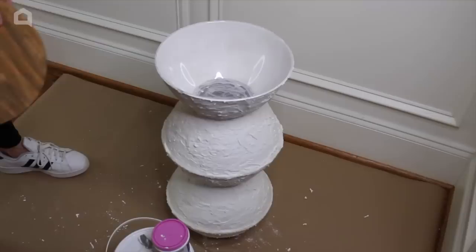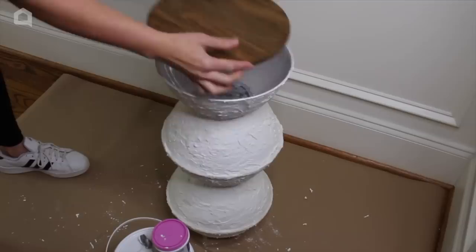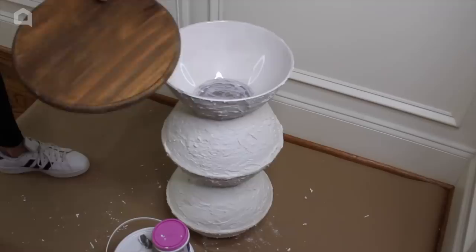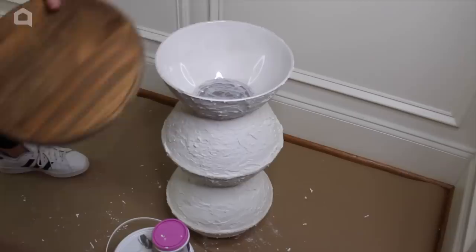For our final step, what we're going to be doing is we are going to be taking our wood round piece and we are going to be attaching it to the top of this table. And we're going to do it one of two ways. I'm going to be using some E6000 and I'm also going to be using my glue gun with my Gorilla Glue sticks to make this happen.